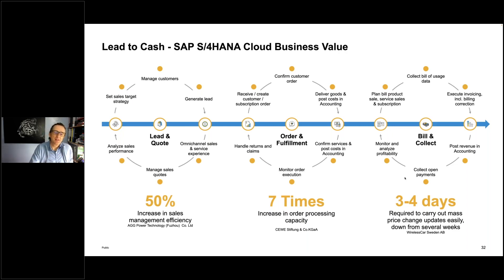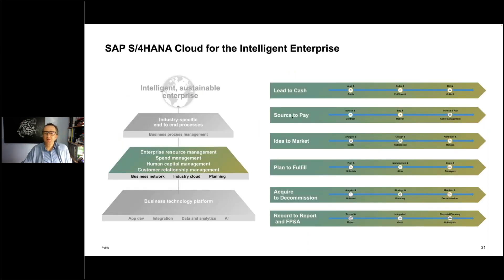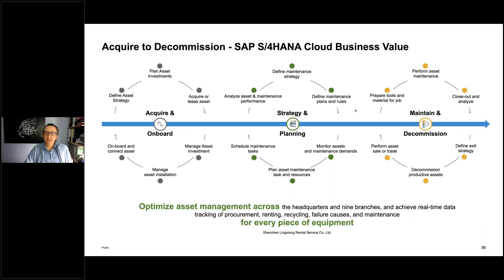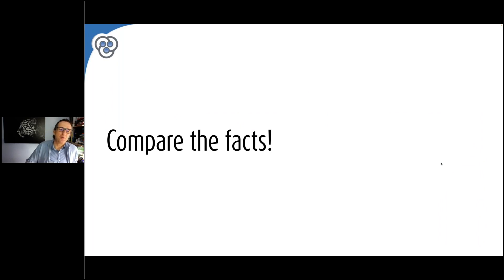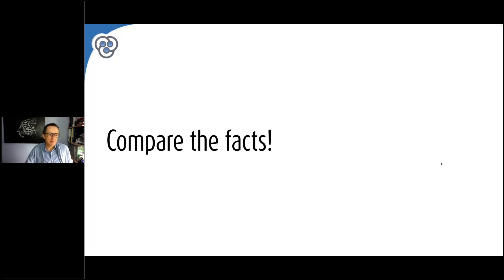We have end-to-end processes — source to pay, idea to market, plan to fulfill, and so on. We take a systematic approach of comparing SAP Business ByDesign with S4HANA Cloud. How do we compare these? What is our methodology? It is not enough to just have some slides and talk a little bit about it, because everybody can say anything.